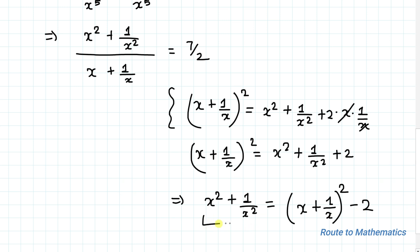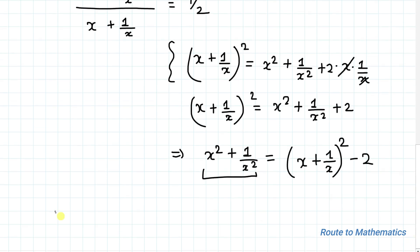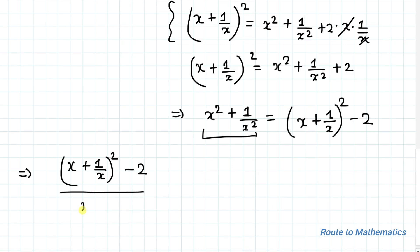Now let's substitute the value of the numerator: x squared plus 1 by x squared is x plus 1 by x, whole squared, minus 2. So this implies we can write x plus 1 by x, whole squared, minus 2, divided by x plus 1 by x, equals 7 by 2.